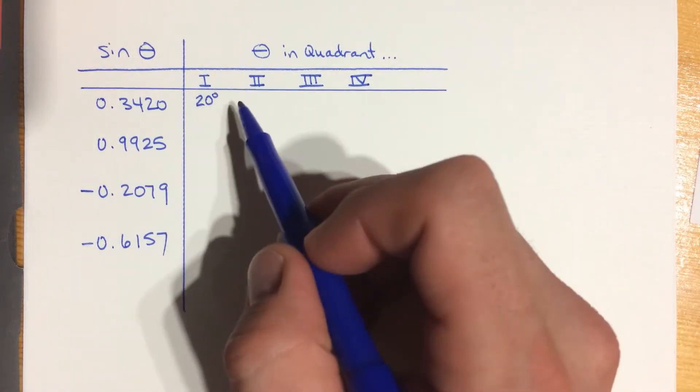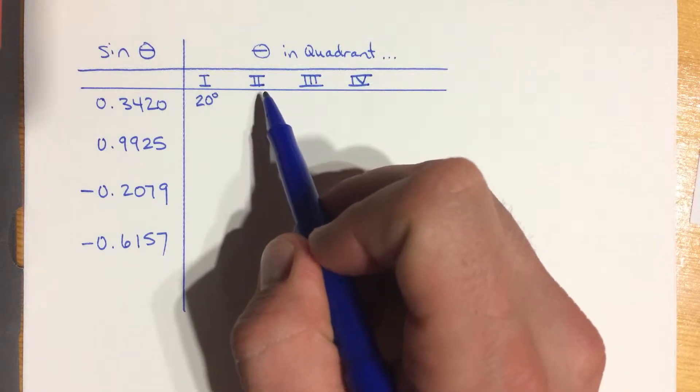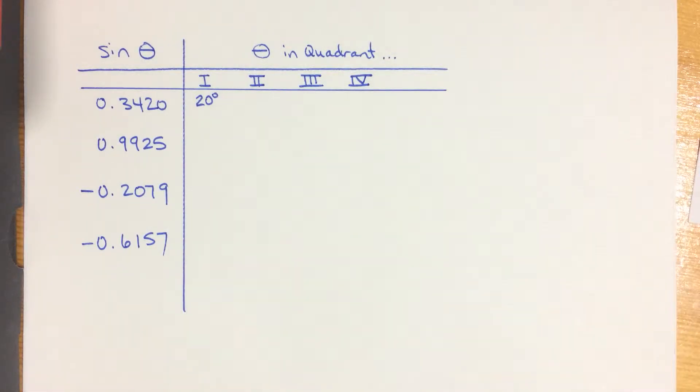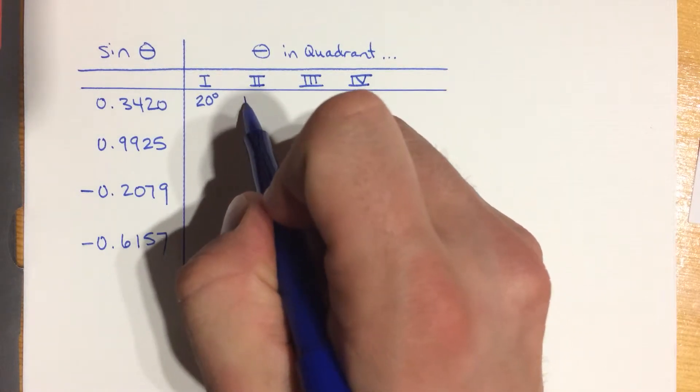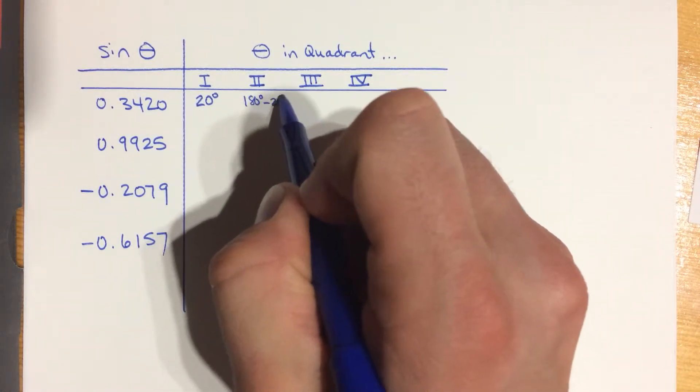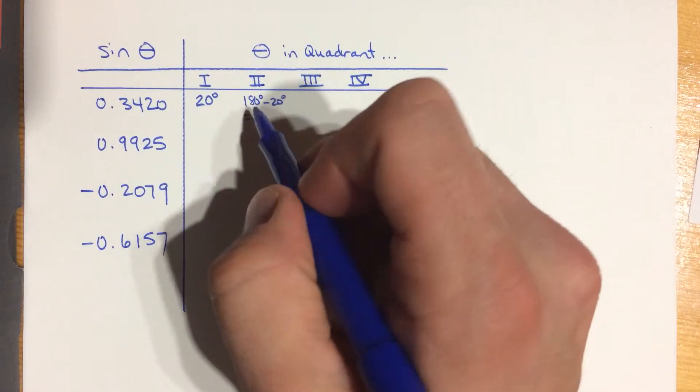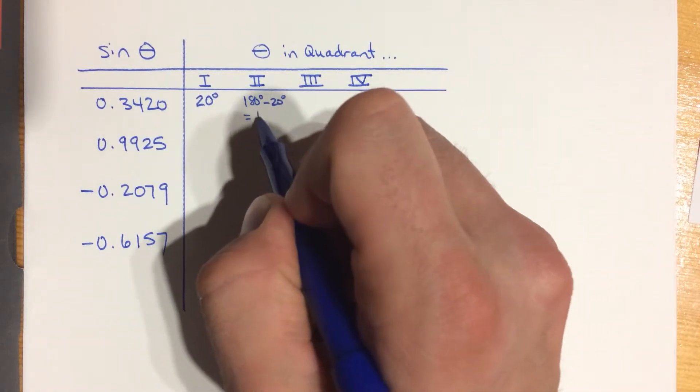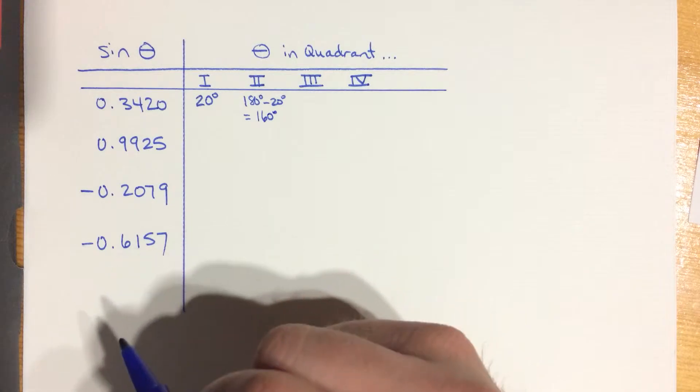But if I know that it is in the second quadrant, it's an obtuse angle, then what you do is you take 180 and you subtract that value, that 20 degree value, and so you're going to get 160 degrees. That would be the value in the second quadrant.